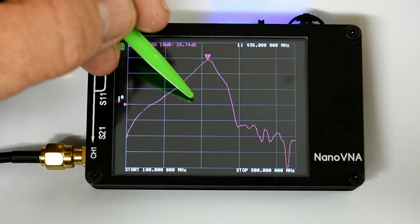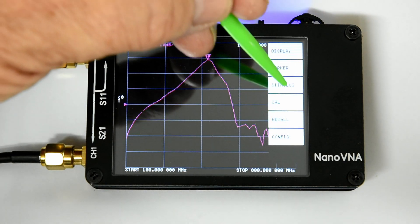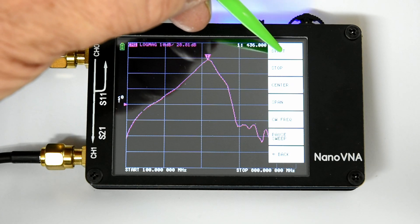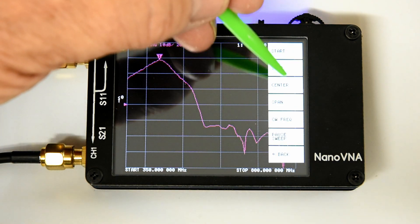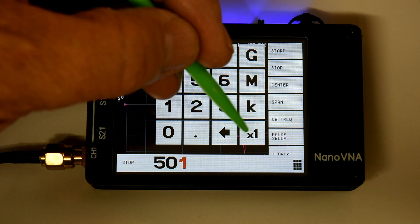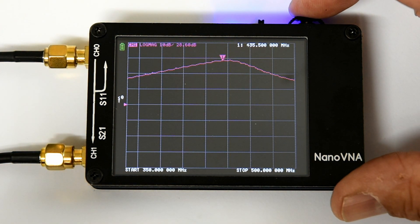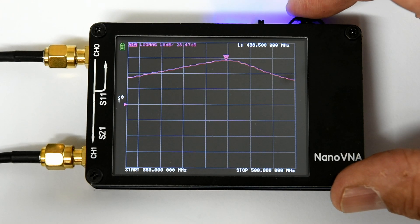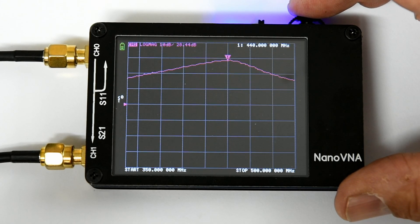So we can zoom in a bit and have a look at this. And just set the frequency range from, say, start 350 megahertz. And stop. I don't know. 500. So now we get a really good idea of what the amplifier looks at the desired frequency. So around the peak at 440.